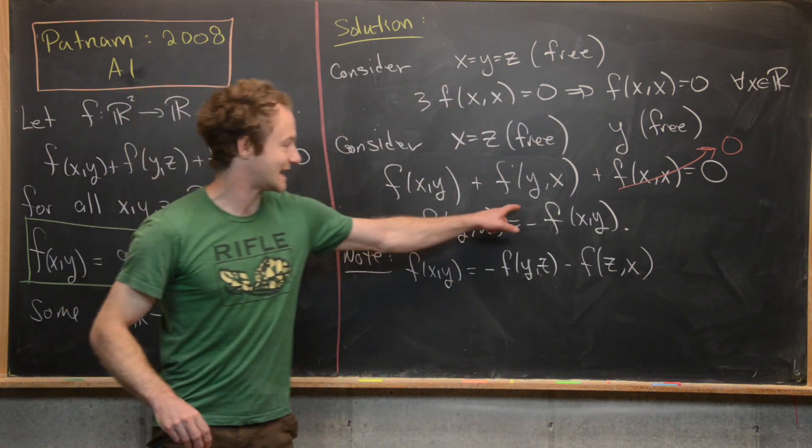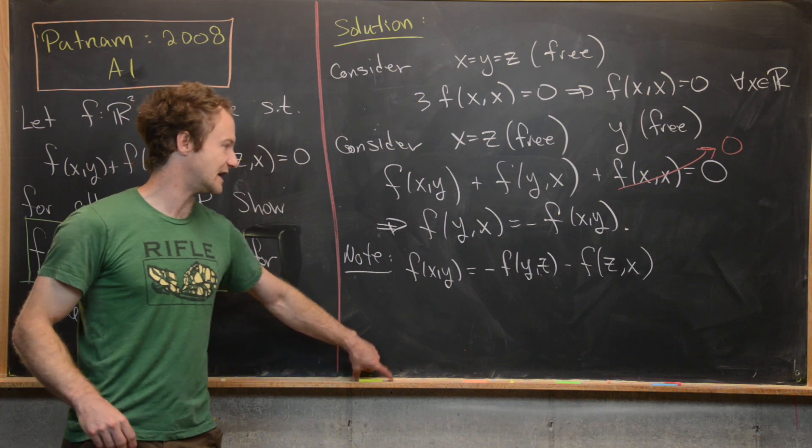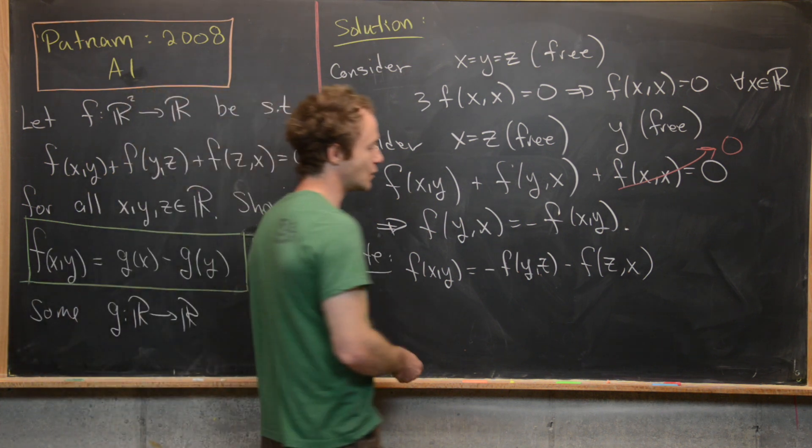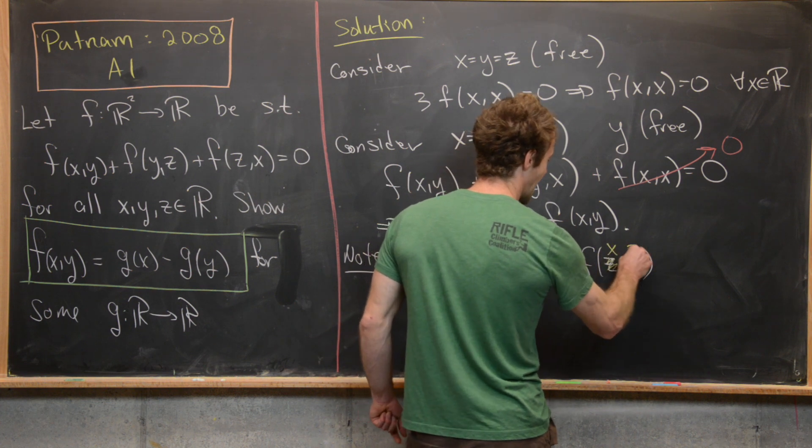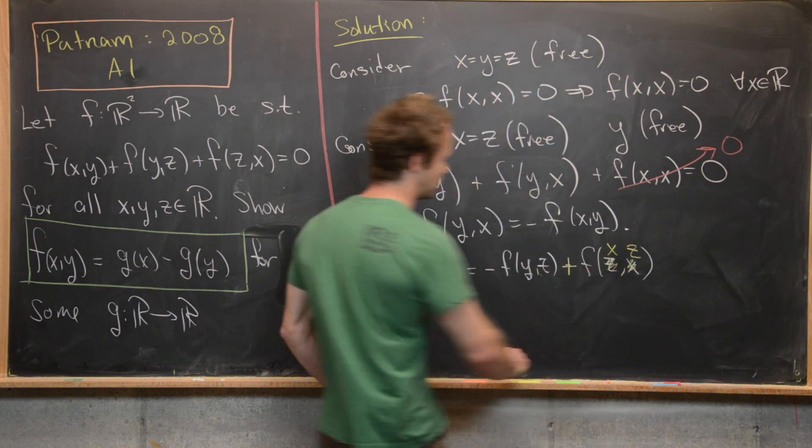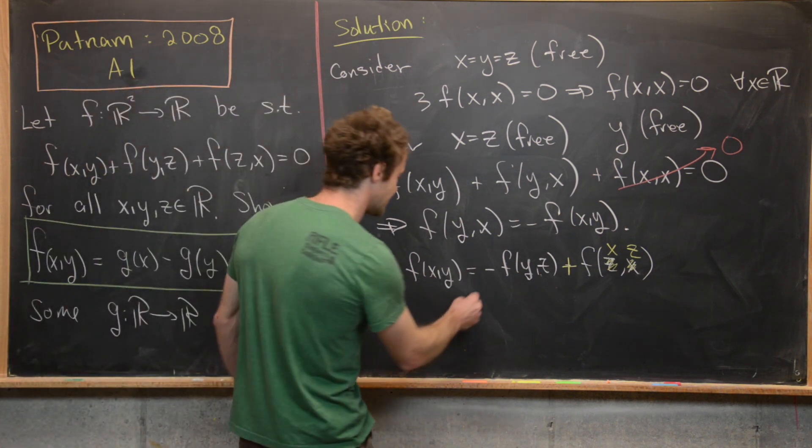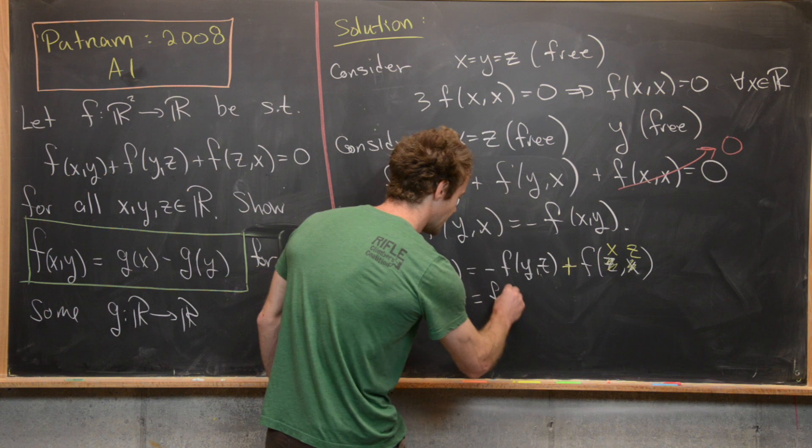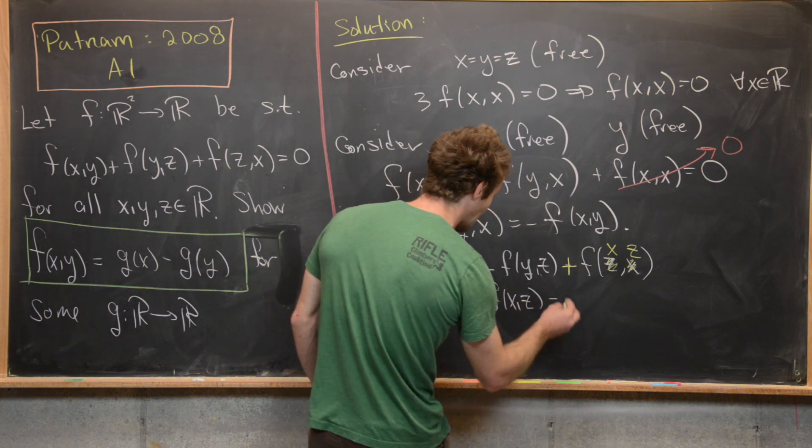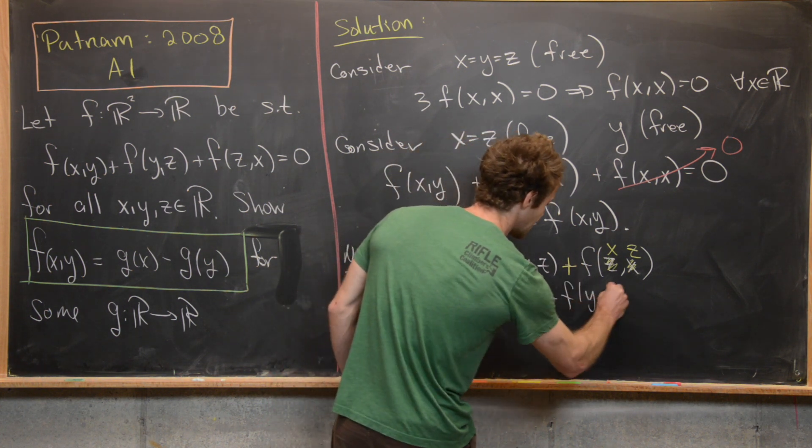But now notice by this antisymmetry, which we calculated in the last step, we see that we can exchange here the z and the x, if we add a plus there. Good. But now notice that that tells us that f(x,y) equals f(x,z) - f(y,z).